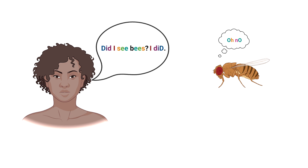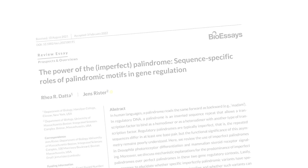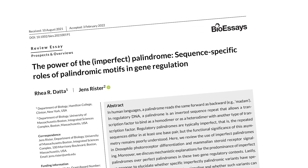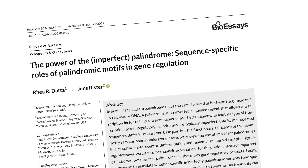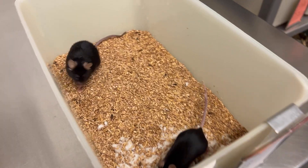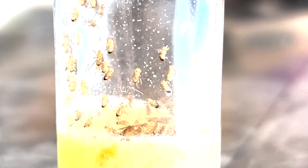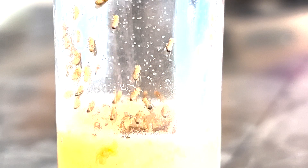It is as though the phrase "oh no" could be considered a palindrome. Therefore we use the word "palindromic" to imply palindrome-like, to include both perfect and imperfect cis-regulatory palindrome types. In this paper, we review two regulatory contexts that rely on palindromic motifs in gene regulation: mammalian steroid hormone signaling and Drosophila terminal photoreceptor differentiation.